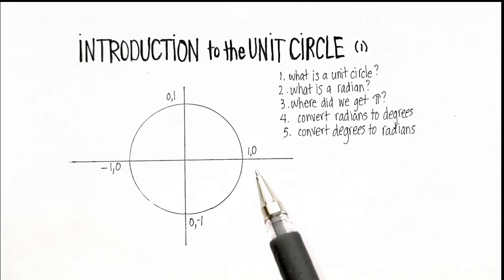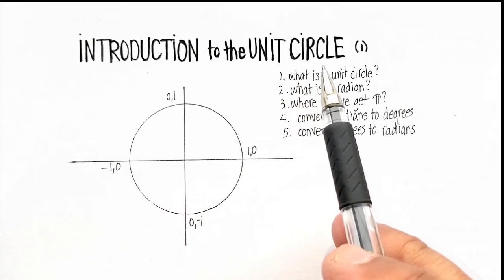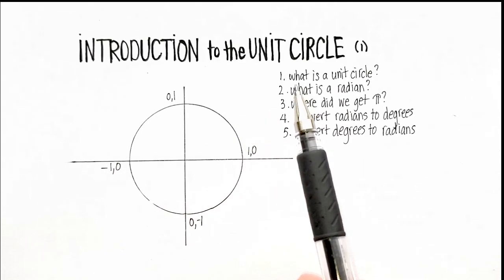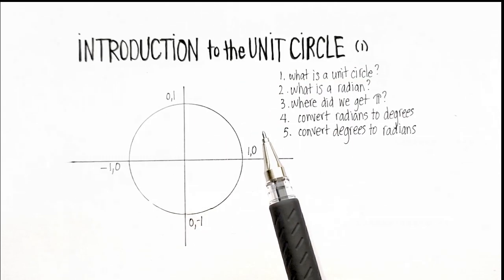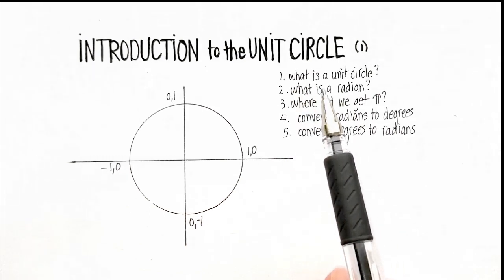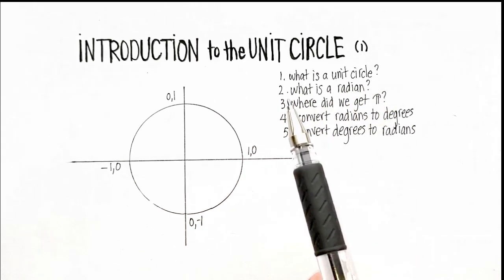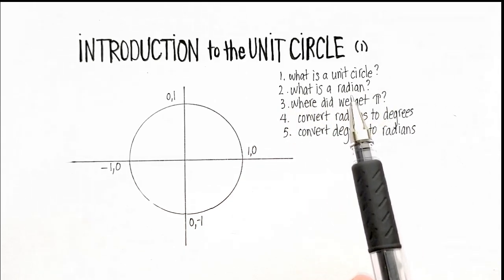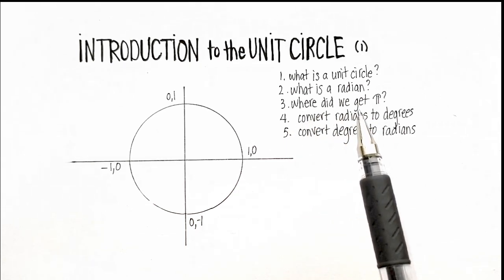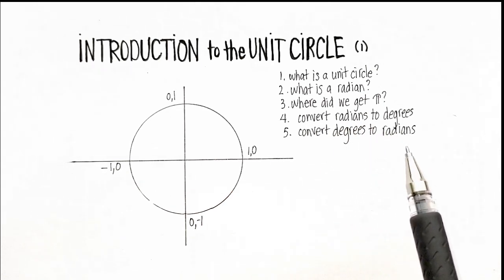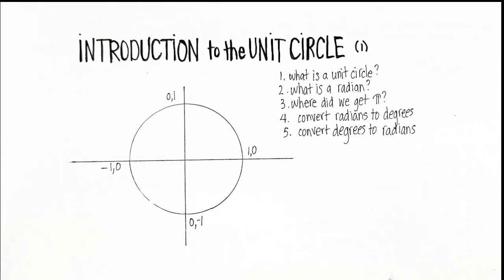In this video we're going to go over a concept called the unit circle. This is a very important concept for geometry, trigonometry, and calculus. I'd like to cover the following topics: what is a unit circle, what is a radian, where do we get the idea of pi, how do we convert radians to degrees, and how do we convert degrees to radians.